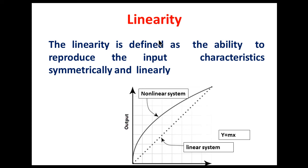Next is linearity. A linear system follows the superposition principle. In the graph we can see input versus output — this is the linear characteristic, sometimes expressed as y = mx. Linearity is defined as the ability to reproduce the input characteristics symmetrically and linearly. A linear system also follows the principle of homogeneity.